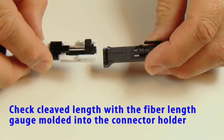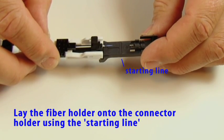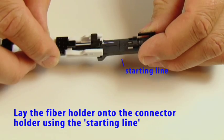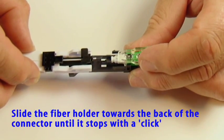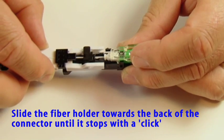Check cleaved length with the fiber length gauge molded into the connector holder. Lay the fiber holder onto the connector holder using the starting line. Slide the fiber holder towards the back of the connector until it stops with a click.